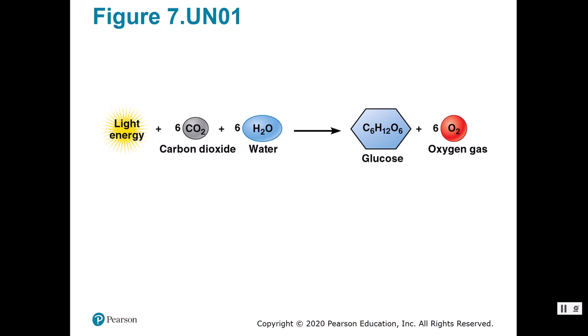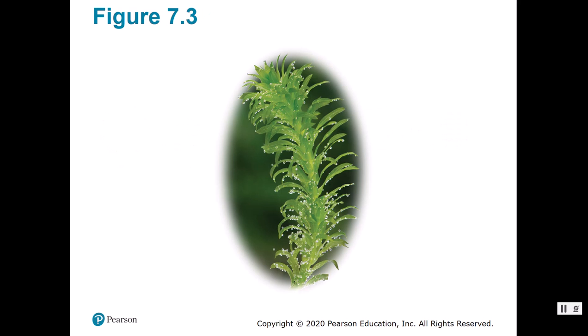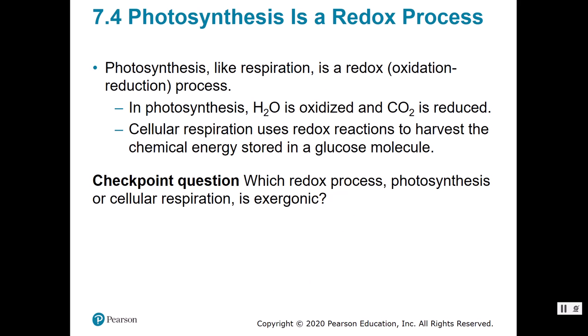This is the chemical formula for photosynthesis. Photosynthesis requires sunlight, carbon dioxide, and water, and it produces glucose and oxygen. We're going to come back to this formula several times in the chapter. This is an Elodea plant showing oxygen bubbles — it's an aquatic plant, and you can see the oxygen being produced as a product of photosynthesis, indicated by the bubbles.